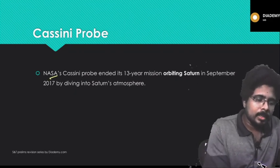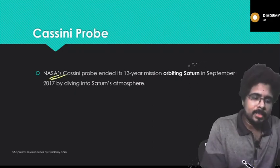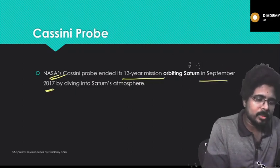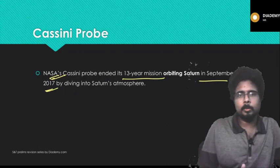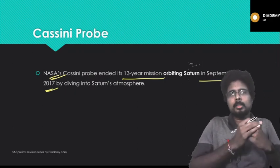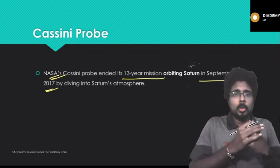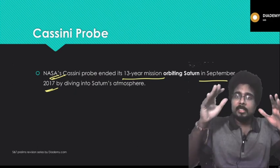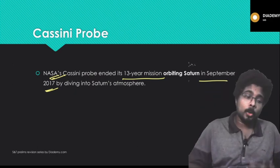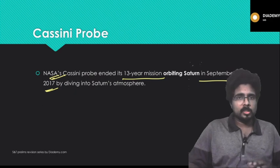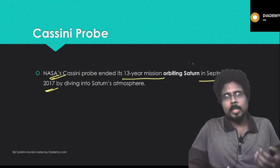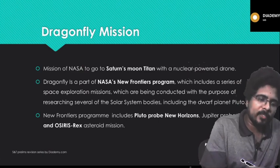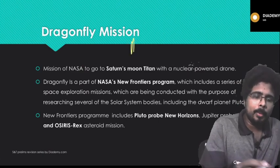Next is the Cassini probe — NASA's probe to Saturn. It ended its 13-year mission orbiting Saturn in September 2017 by diving into Saturn's atmosphere. The main objective of the Cassini probe was to study Saturn.